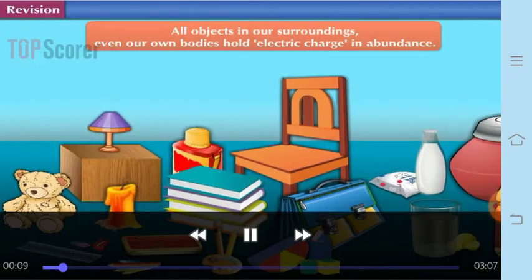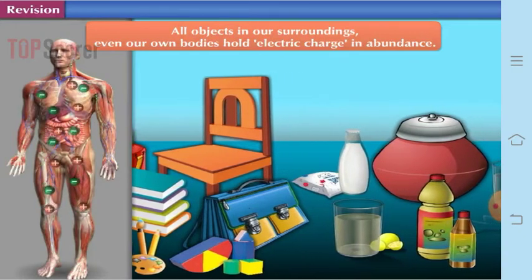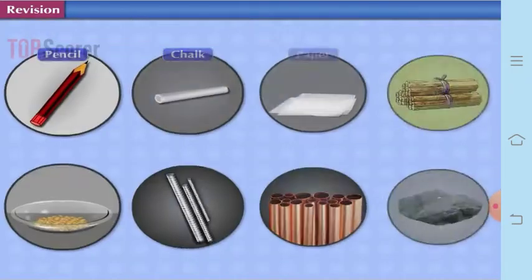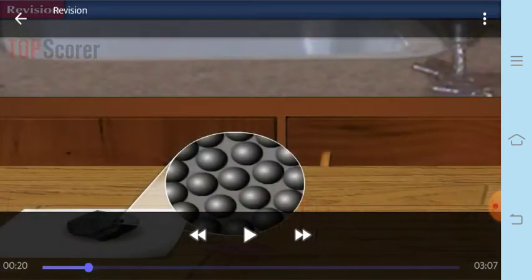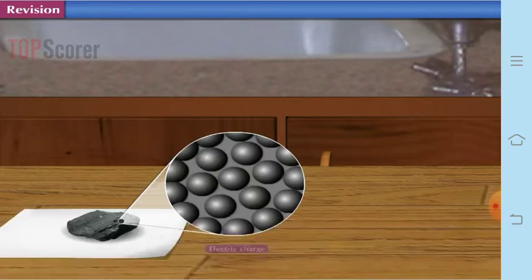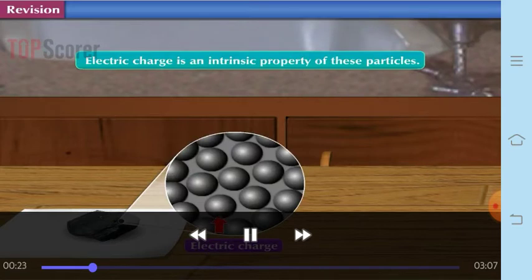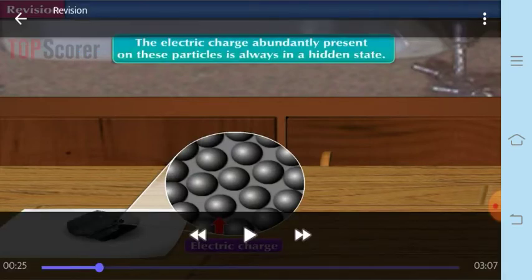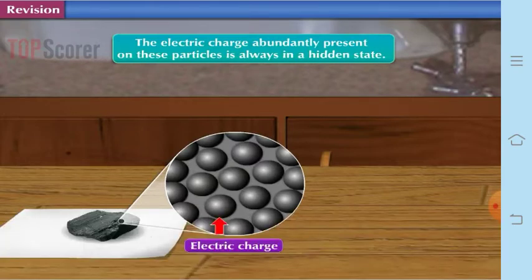You know our body as well as different things are made up of charges. All objects in the surroundings and even human bodies are made up of charges. All substances are made up of very tiny particles. This you have studied in standard 5. Electric charge is an intrinsic property of these particles. What does this mean? That means there are certain electric charges within each object, that is why it is called an intrinsic property.